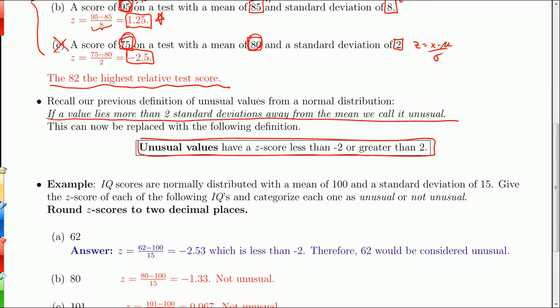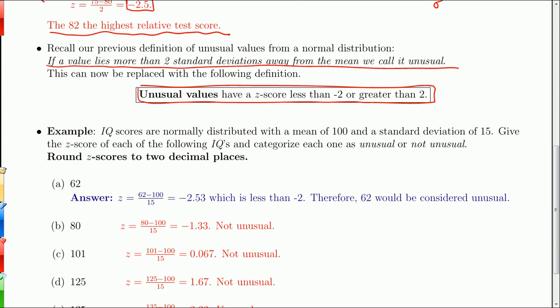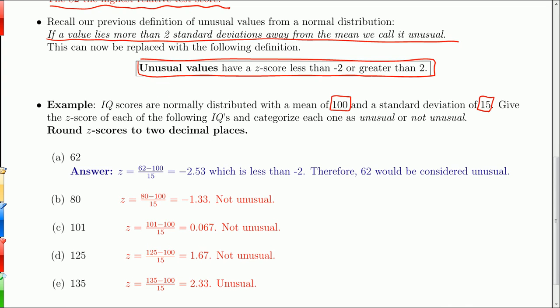We'll do a few examples here. We're going back to the IQ distribution. I use that distribution because the mean is 100, and that's pretty close to true, and the standard deviation is 15. They're nice simple whole numbers. In this case, I give you five IQs and ask you to calculate the z-score and tell me whether it's unusual or not unusual. When you look at A here, the z-score is 62 minus 100 over 15. You get a negative z-score.